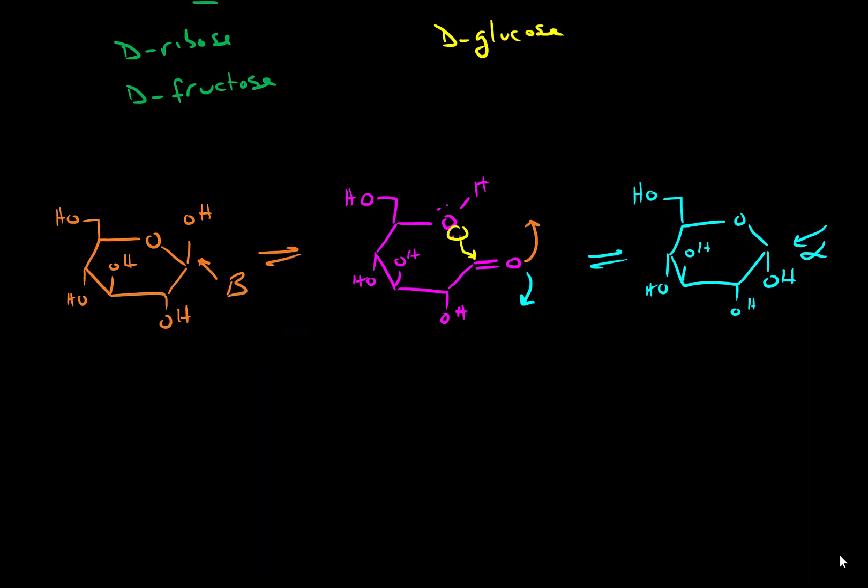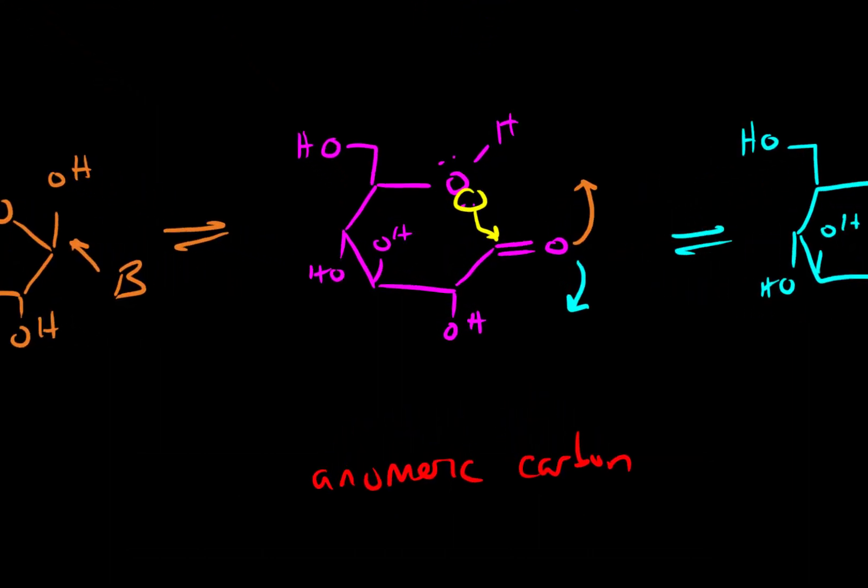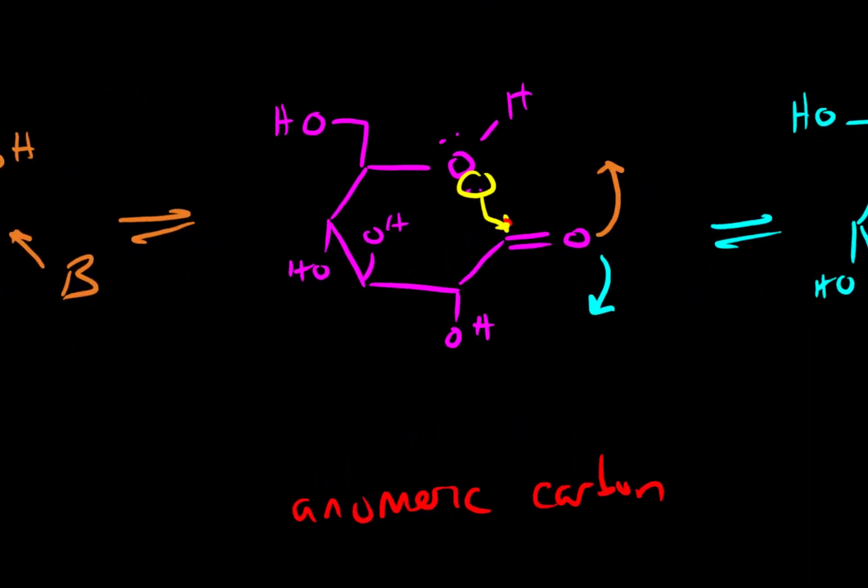And this carbon, the one that can adopt the alpha or the beta orientation, is known as our anomeric carbon. And every single sugar has an anomeric carbon. The thing that distinguishes it is it's the carbon in the cyclical form that can adopt orientation where the alcohol points up or the beta orientation or the alcohol points down in the alpha orientation. And it's always going to be the carbon that has the carbonyl in the linear form. So this carbon that contains the carbonyl ends up being the anomeric carbon in our cyclical form.